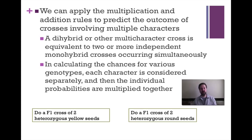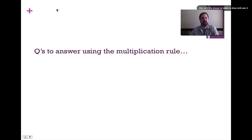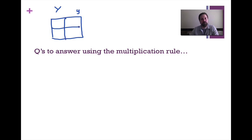Let's do a couple of examples. We'll do an F1 cross of two heterozygous yellow seeds, and an F1 cross of two heterozygous round seeds. For the yellow seeds cross, each parent has one capital Y allele and one lowercase y allele. Our Punnett square gives us: YY, Yy, Yy, and yy.